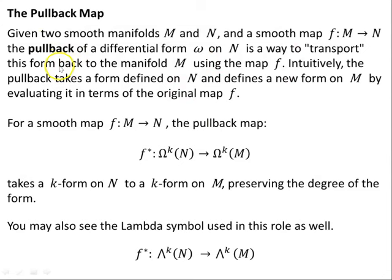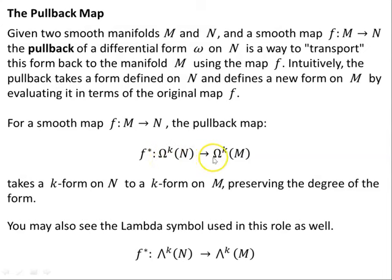Now let's concentrate on the pullback. Given two smooth manifolds M and N and a smooth map F from M to N, as seen in previous videos, the pullback of a differential form omega on N is a way to transport this form back to the manifold M using the map F. Intuitively, the pullback takes a form defined on N and defines a new form on M by evaluating in terms of the original map F. For a smooth map F: M→N, the pullback F* of omega_k on N is a map from the space of K-forms on N to the space of K-forms on M. This is the general definition — not just for two-forms or one-forms — taking a K-form on N to a K-form on M, preserving the degree of the form.